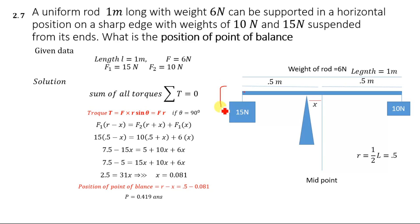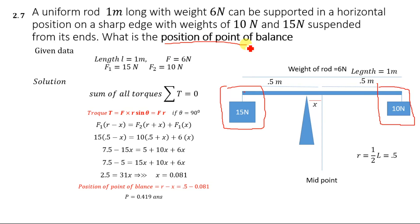A 15 newton weight is suspended from one end of this rod and a 10 newton weight is suspended from the other end. We are going to calculate the position of the point of balance — the point from where this rod can be balanced horizontally. The total length of the rod is one meter, so the midpoint will be at 0.5 meter.